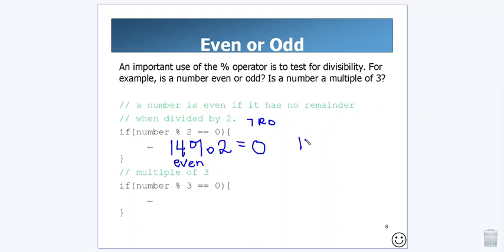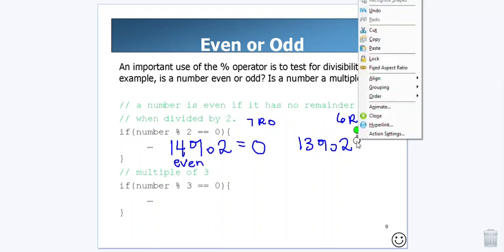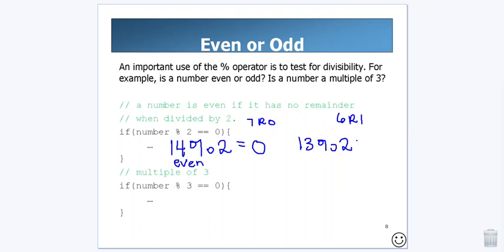But if I had done 13 mod 2, well, that'll be a six remainder one, right? You'll notice that here my remainder is going to be one. So, if I do mod 2 and I get a zero, we know our number is going to be even. And if I do mod 2 and I get one, I know my number is odd.